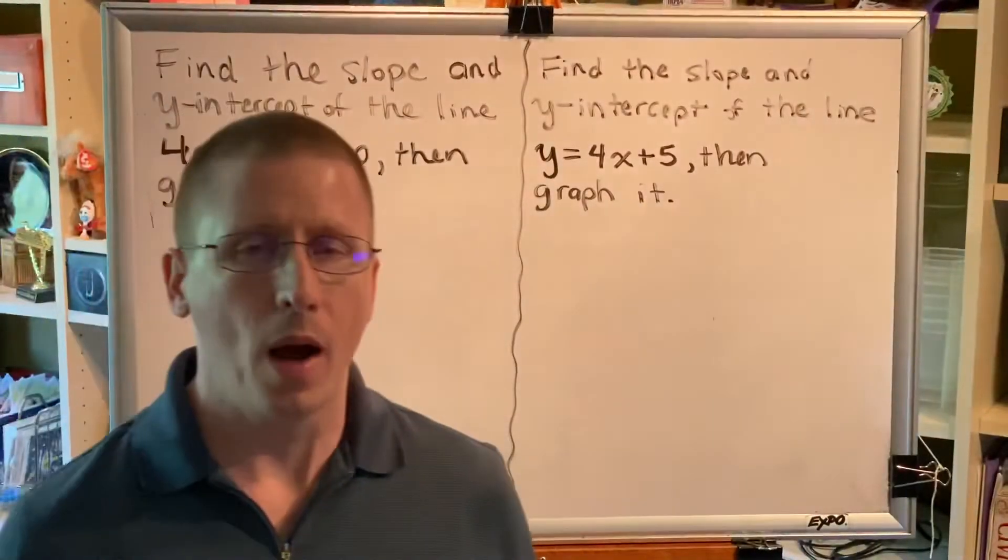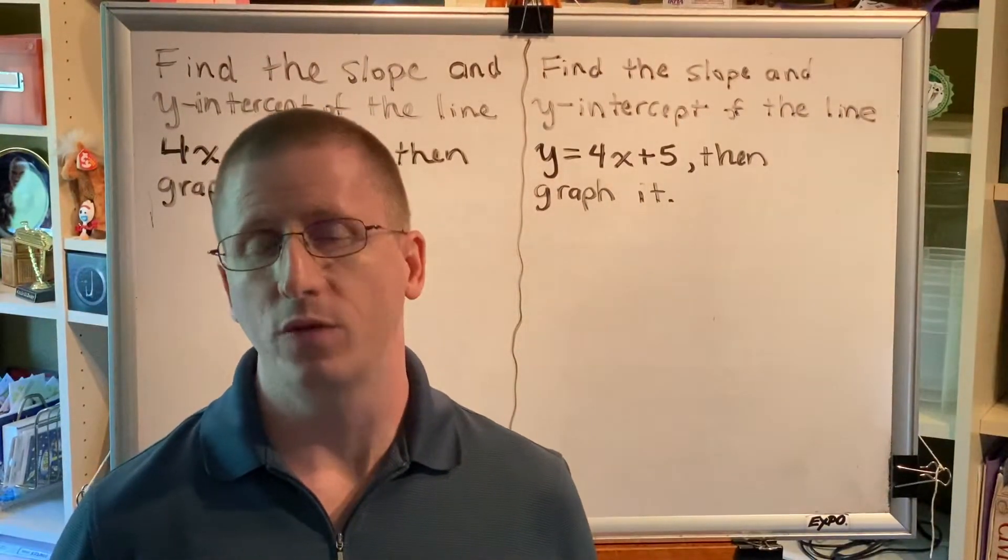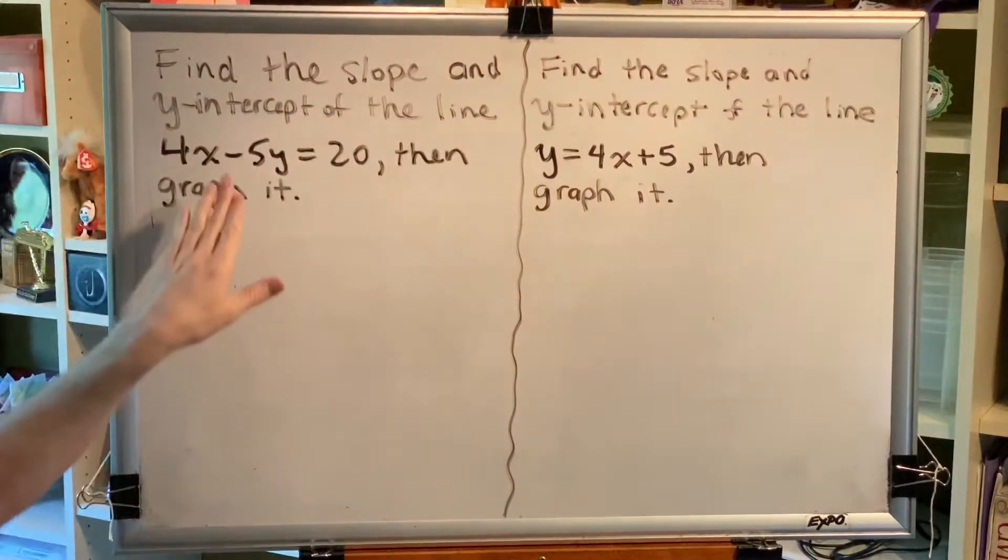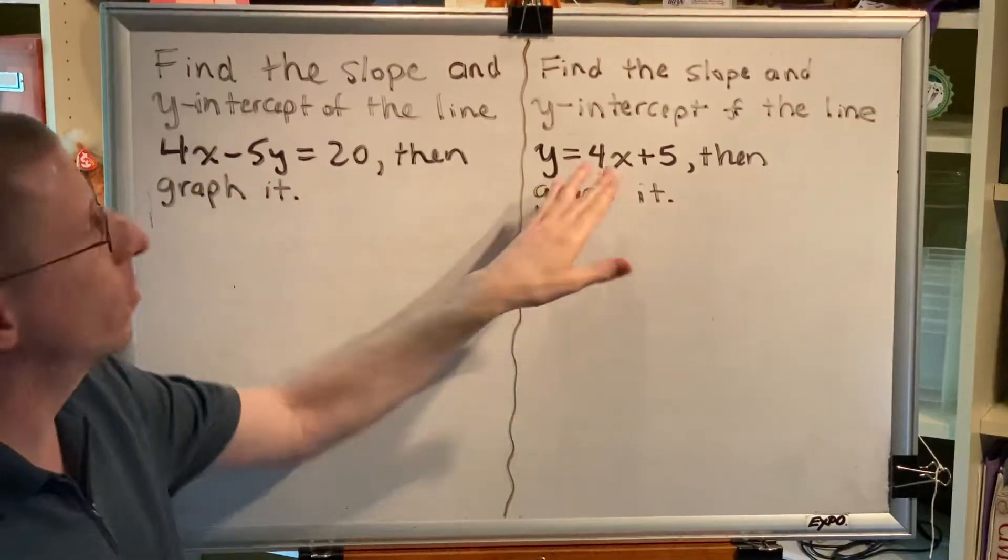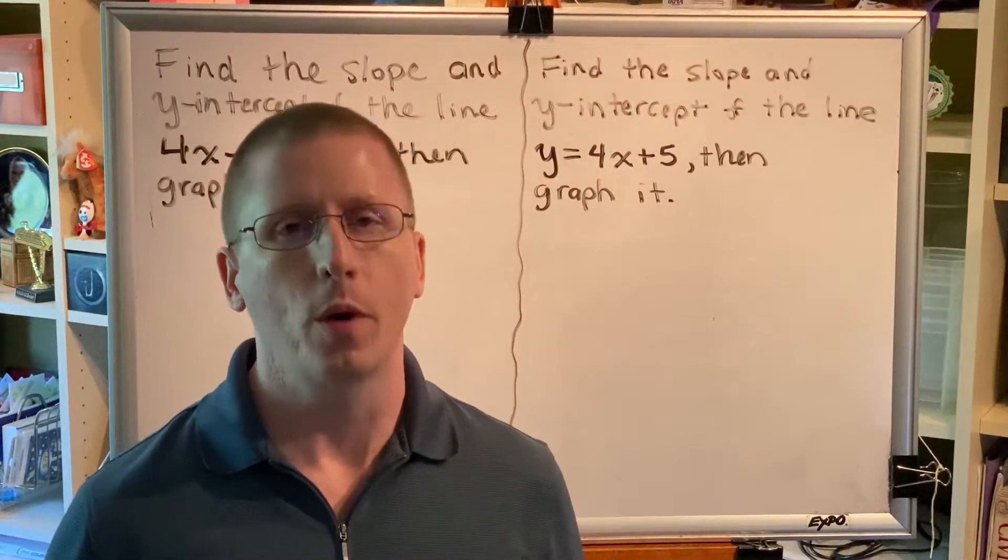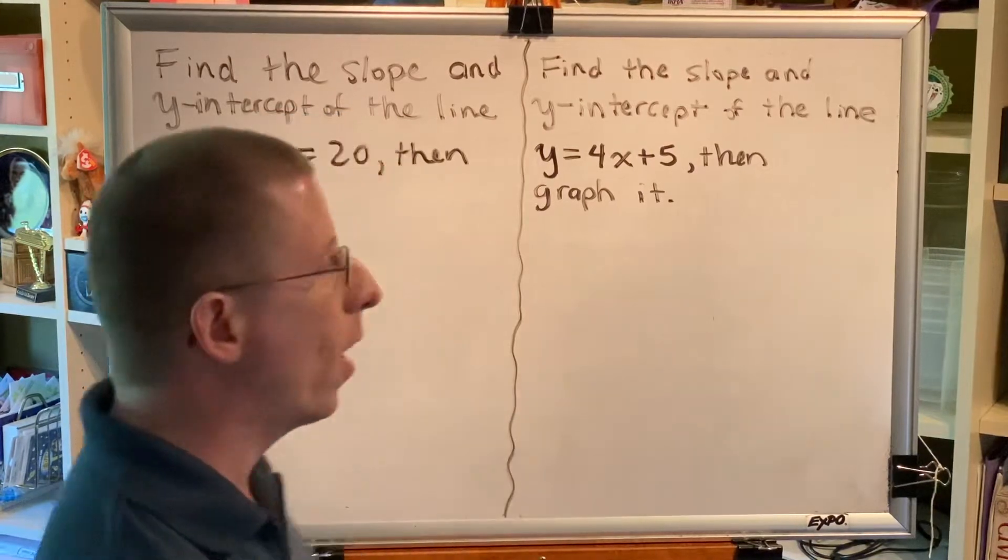Okay, these are clearly very similar problems, but the equation forms of the lines we've been given are different. This is standard form. This is slope-intercept form. So the way we'll get the information that we're being asked for is different for these two problems.